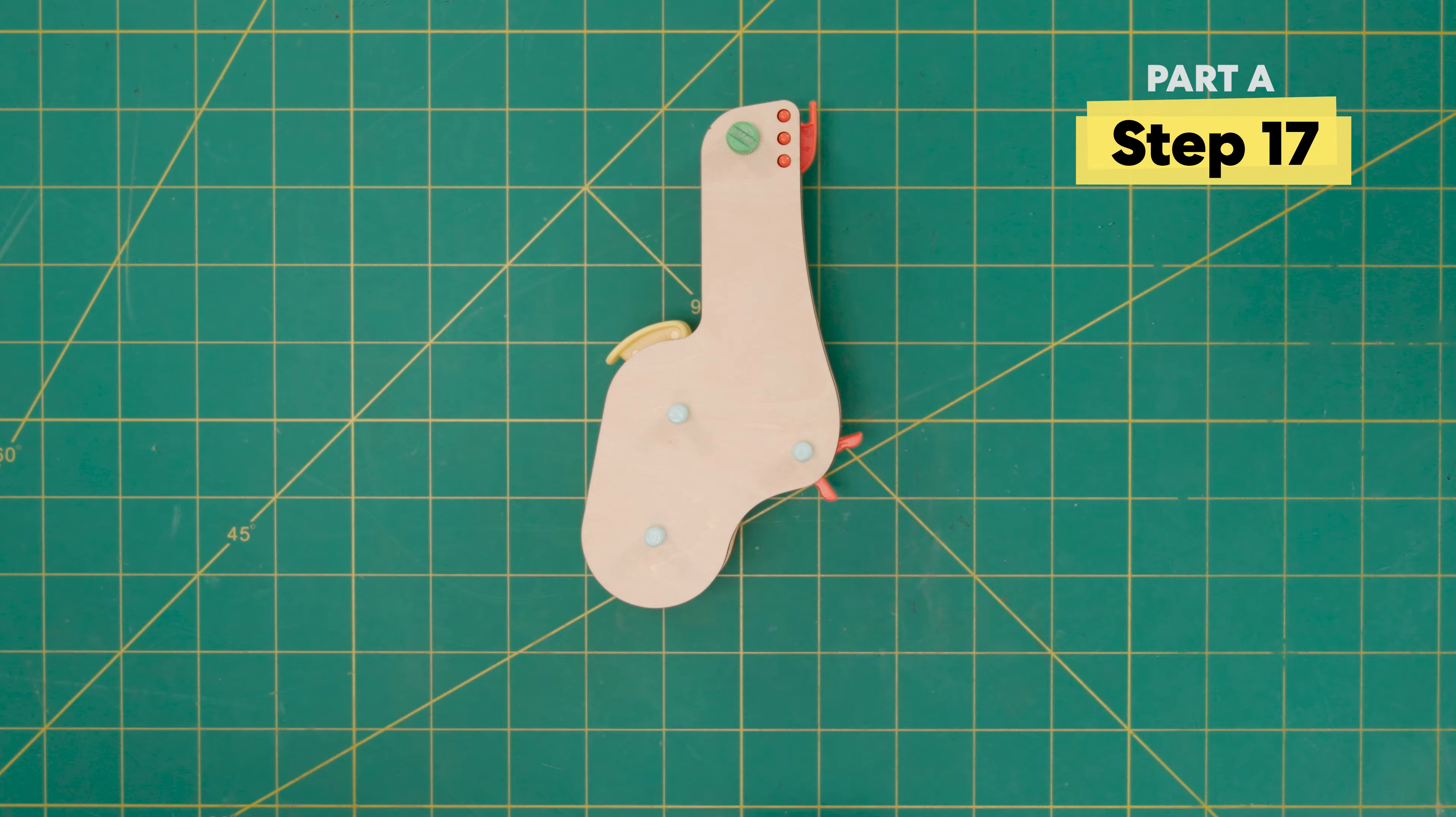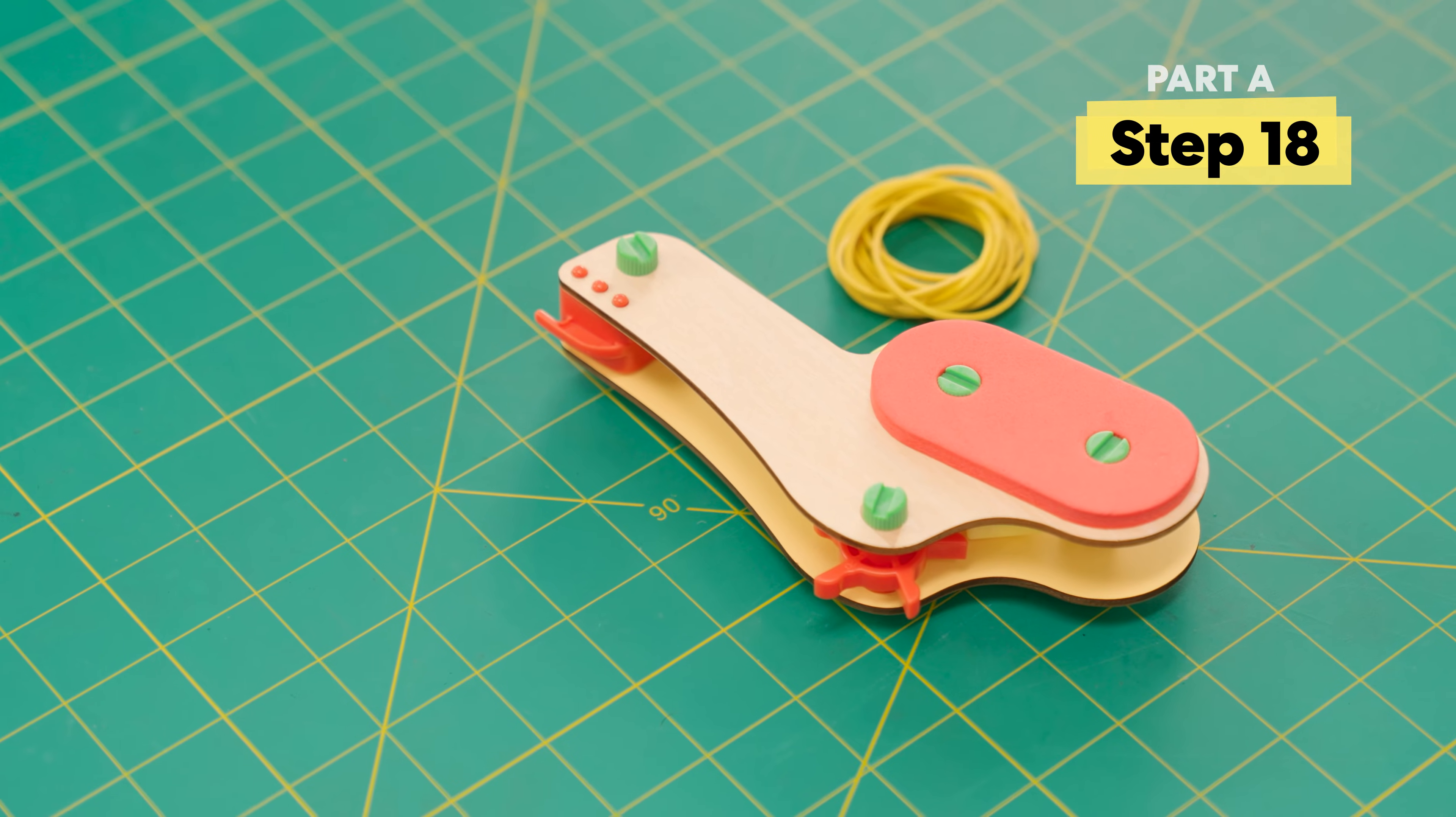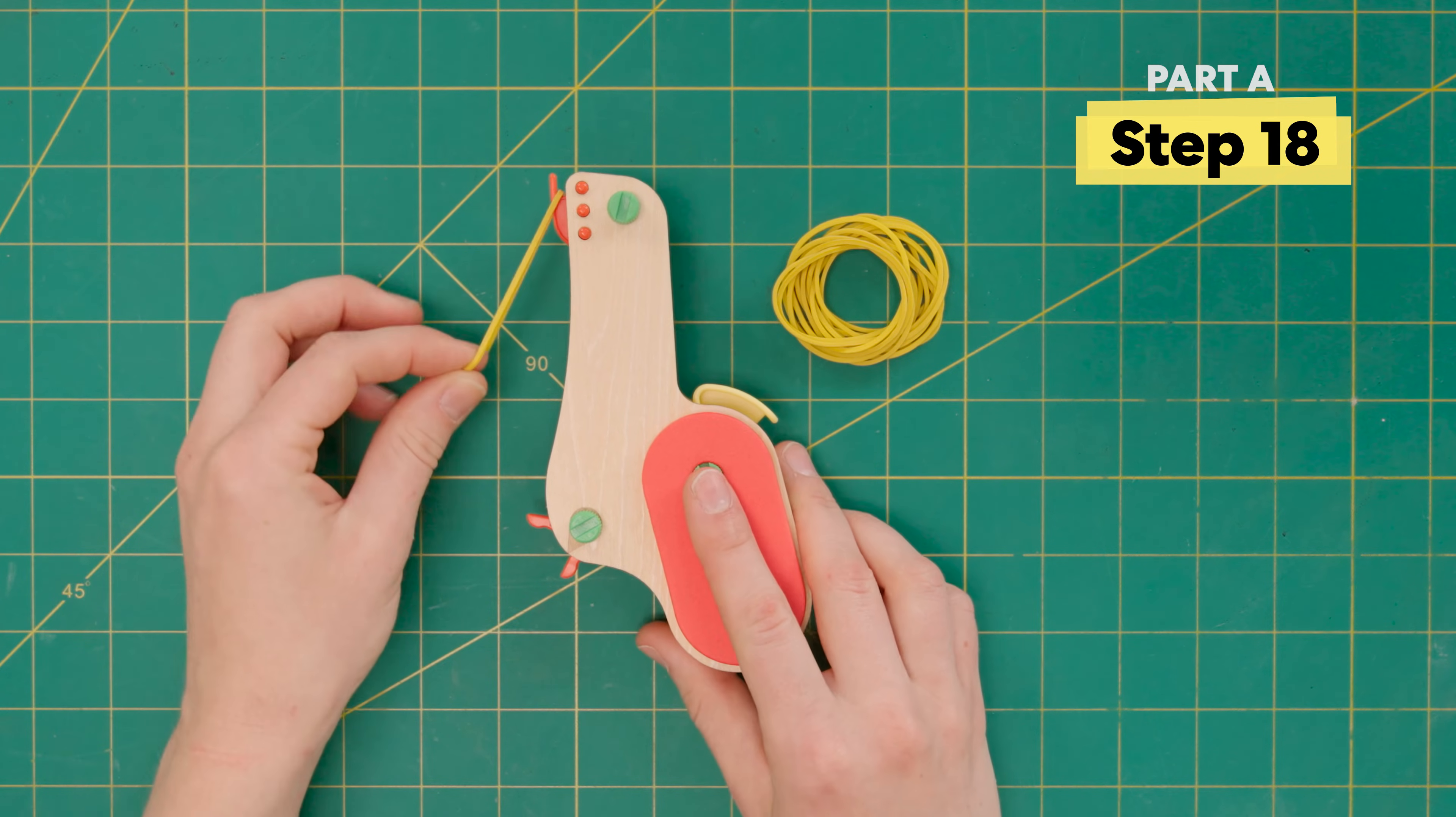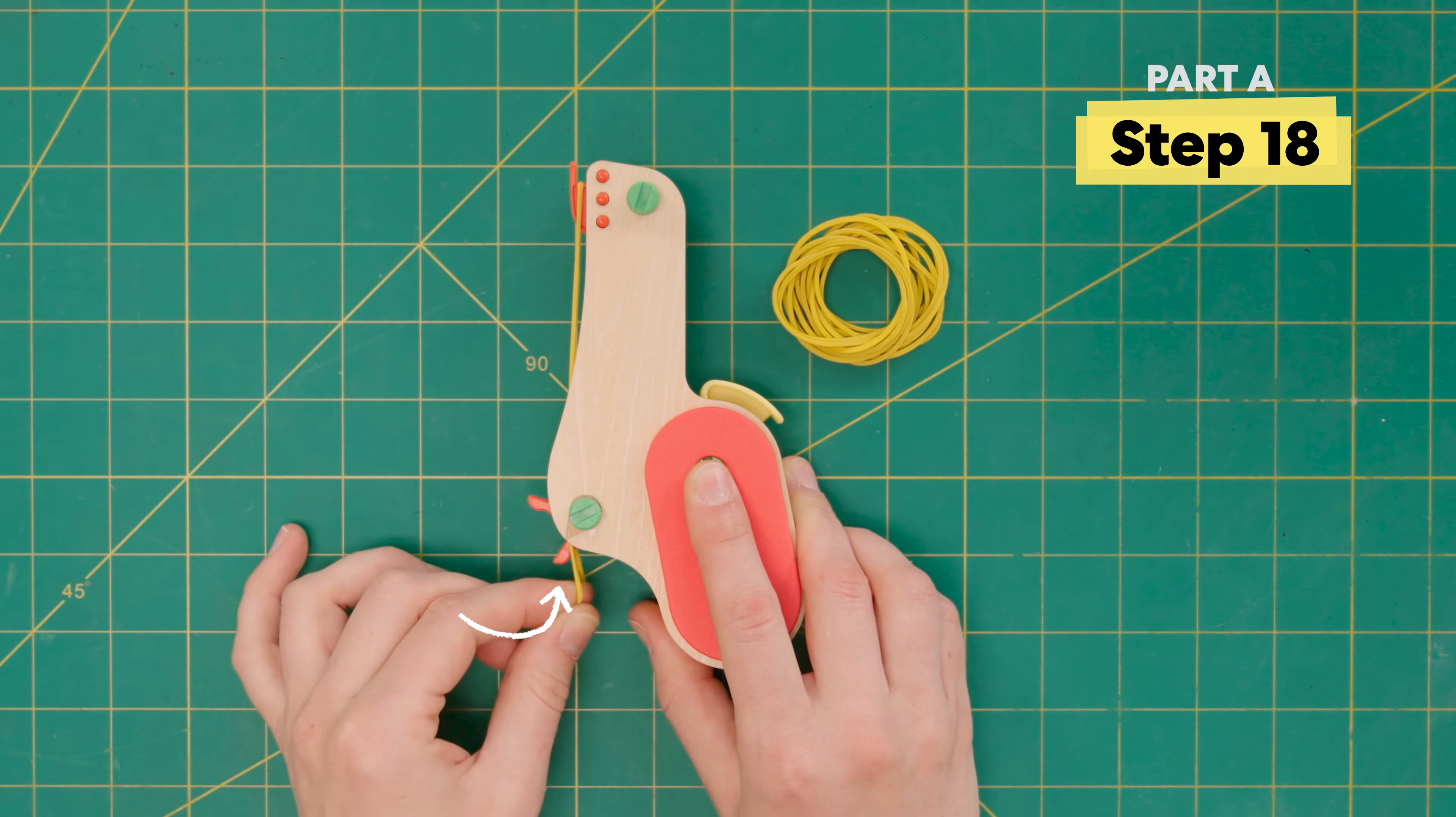Awesome! You've built the other blaster. All right, now to load it up. Take one rubber band, stretch it around the hook on the top, and then stretch it over this lowest peg.